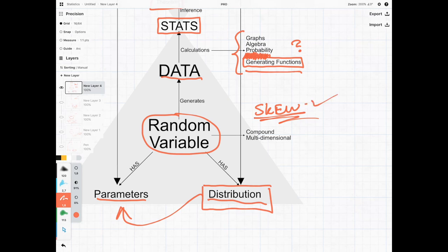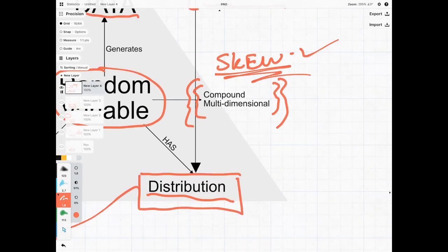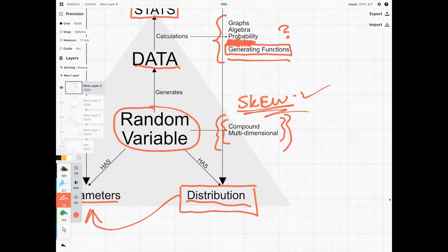This becomes very important when we start extending random variables later to compound or multi-dimensional or joint or conditional and all of those types of things. We're going to see that generating functions allow us to handle the math in a much more eloquent way than calculus and integration.